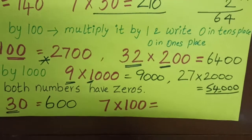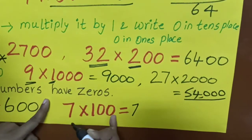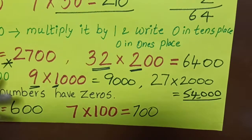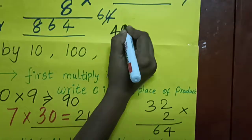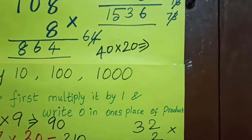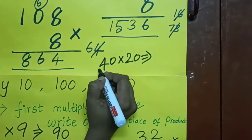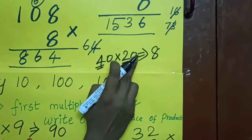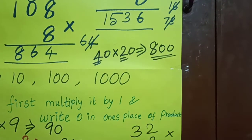Quick example: 7 into 100 — 7 ones are 7, then add 2 zeros, so 700. Another example: 40 into 20. How will you do? 4 twos are 8, then count zeros: 1, 2 — two zeros. The answer is 800.